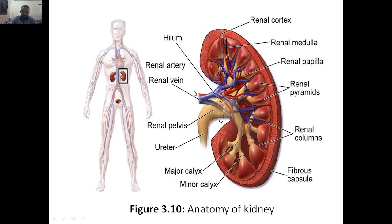This is the anatomy of the kidney. We are having different parts here — you can take a screenshot and study. There is the renal cortex, renal medulla, renal papilla, renal pyramids, and renal columns in between. The fibrous capsule covers the whole thing. Then there is the minor calyx and major calyx. We also have the ureter, which enters the kidney, the renal pelvis, and the combination of structures called the hilum. Next are the renal artery and renal vein.